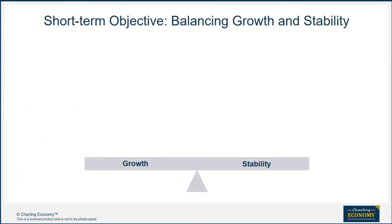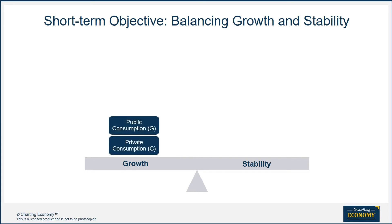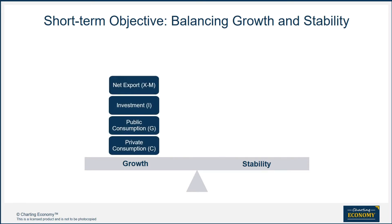The short-term objective of economic policy makers is to balance growth and stability. They can stimulate growth through these four engines on the expenditure side: Private Consumption, Public Consumption, Investment, and Net Export. Increasing employment usually is the immediate target for short-term growth stimulus policies.